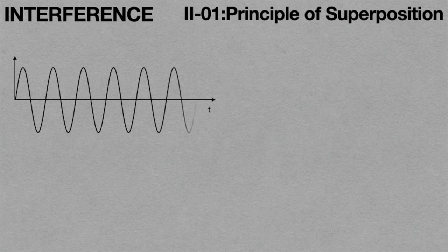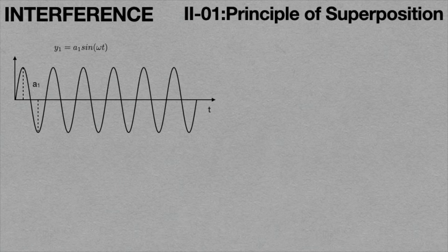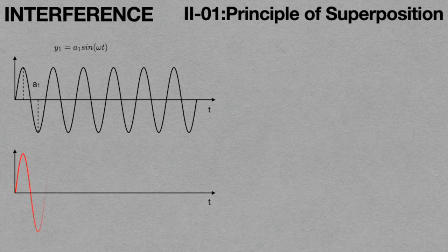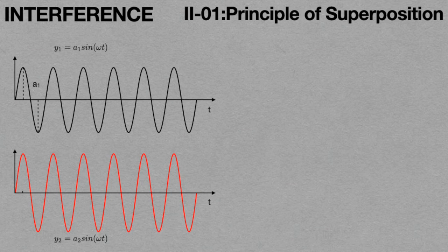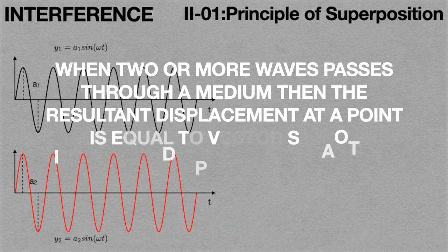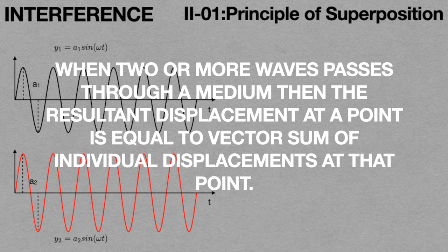This we can write as: Y1 is equal to A1 sin omega t. Here, Y1 is the displacement of the particles at any instant of time, and A1 is the maximum amplitude attained by the particle. Similarly, we can draw another light wave from another light source, represented as Y2. Here, Y2 is the displacement of the particles at any instant of time t, and A2 is the maximum amplitude attained by the particle. When these two waves are assumed to be superposed, then according to definition, when two or more waves pass through a medium, the resultant displacement at a point is equal to the vector sum of individual displacements at that point.